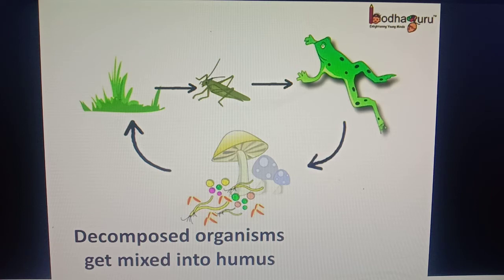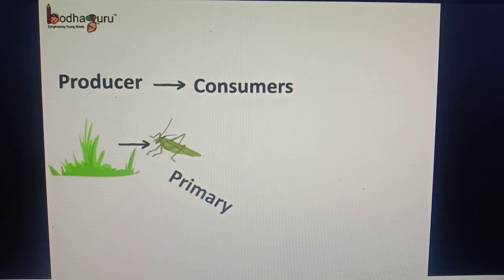The nutrients get recycled and after the death of the organism, all again goes back to nature. The life goes on in a way that no nutrients are lost. The plants absorb the nutrients from nature and produce food. They are called producers.